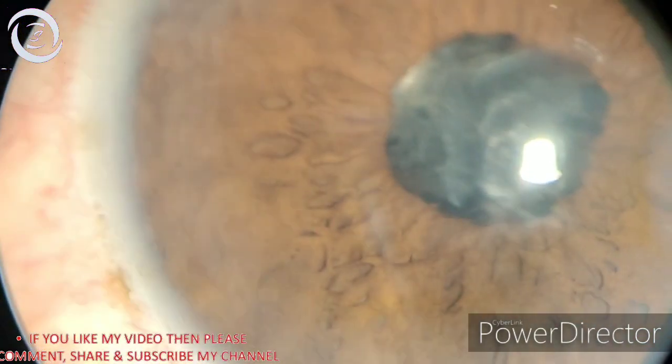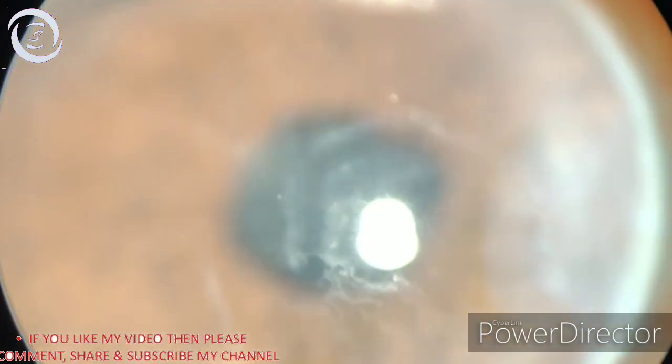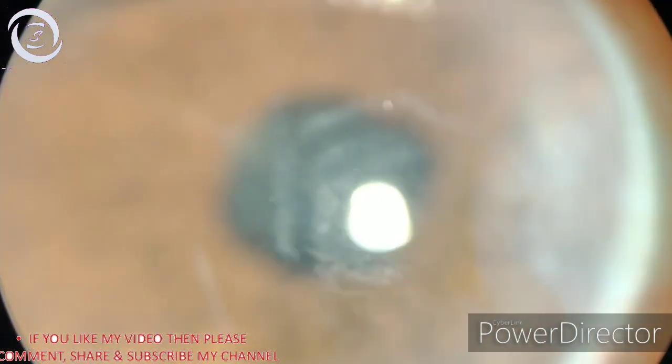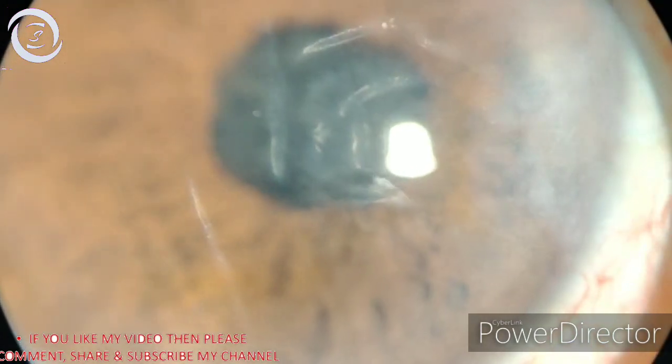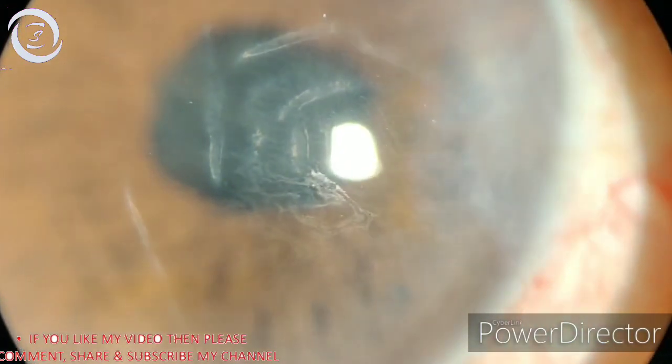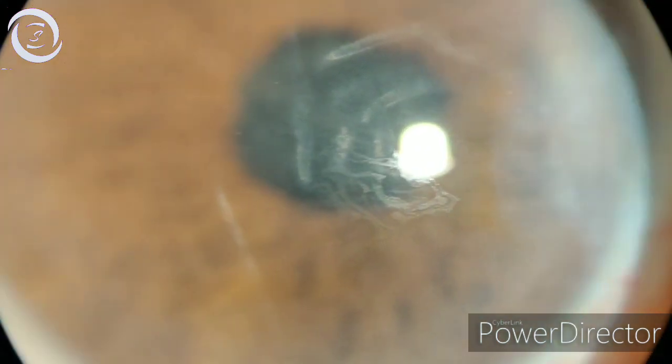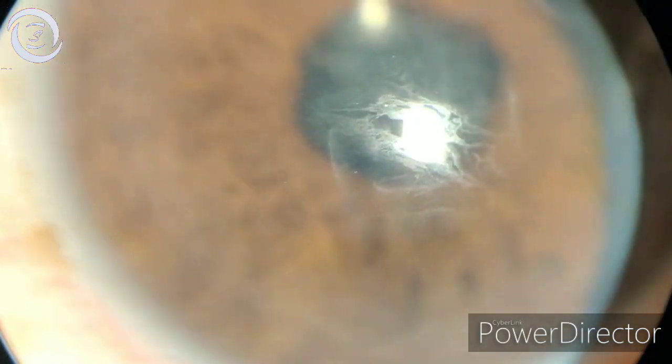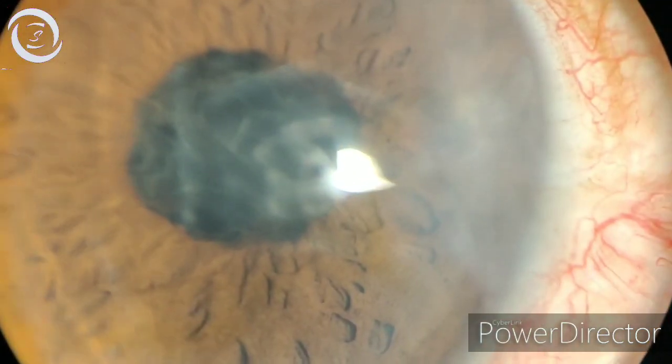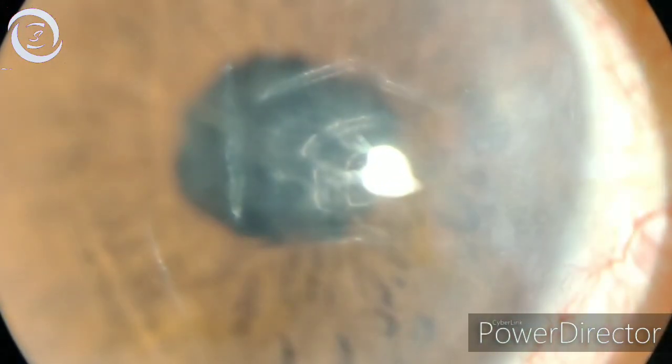Now what is striate? Striate means lines, and striate keratopathy means central corneal stromal edema causing a network of lines which occurs after cataract surgery due to endothelial cell loss.